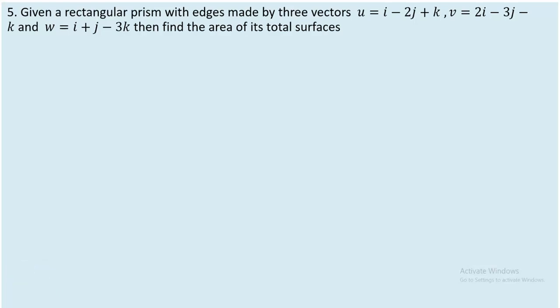Hey students, proceeding to the other question. You are given a rectangular prism with edges made by three vectors U, V, and W. The question is to find the area of its total surfaces. A prism has six faces where a pair of three faces are basically having a congruent area. So what we need to do is first calculate three rectangular regions' area and then multiply that by two.